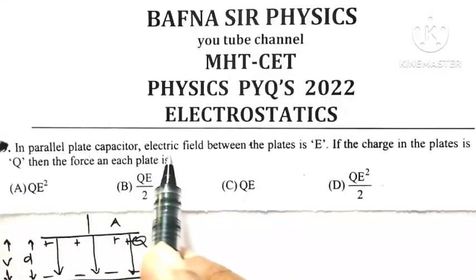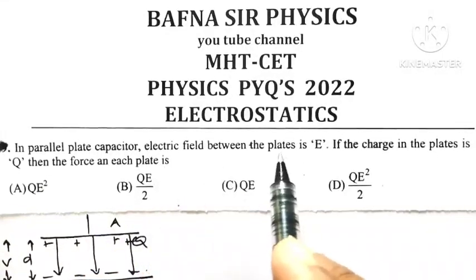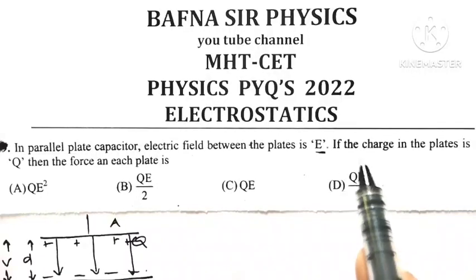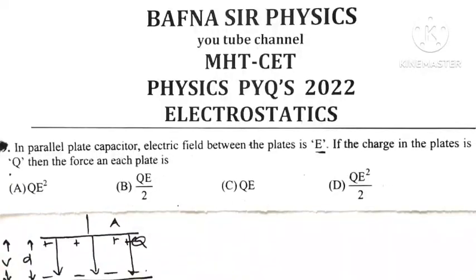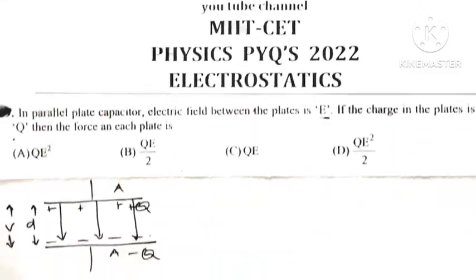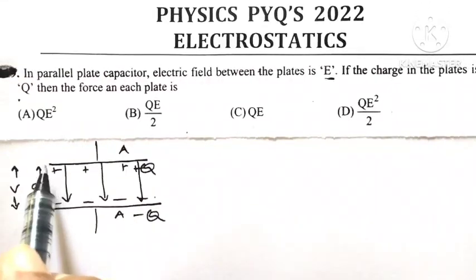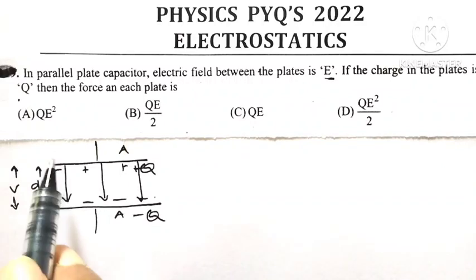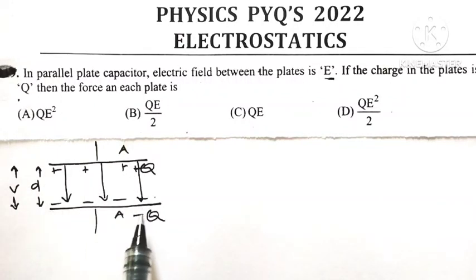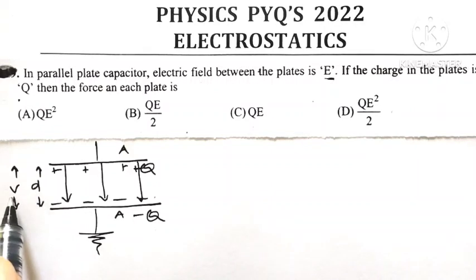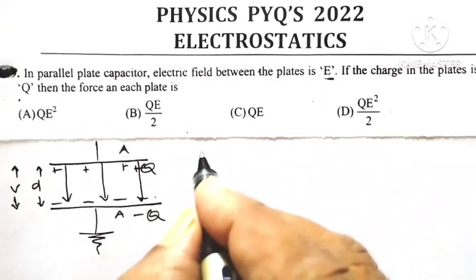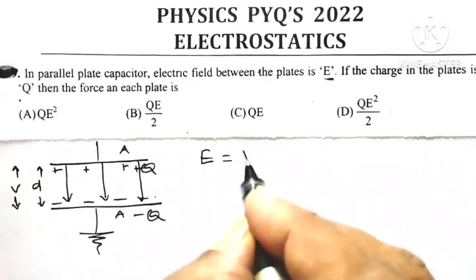In a parallel plate capacitor, the electric field between the plates is E. If the charge on the plate is Q, then we need to find the force on each plate. Here we have a parallel plate condenser — one plate is given plus Q charge, which induces minus Q charge on the other plate. The plates are separated by distance D, and V is the electric potential difference between them, so the electric field E equals V divided by D.